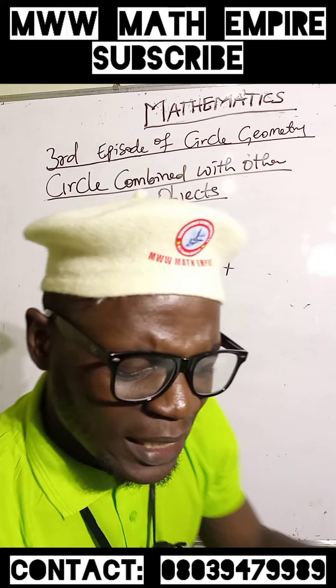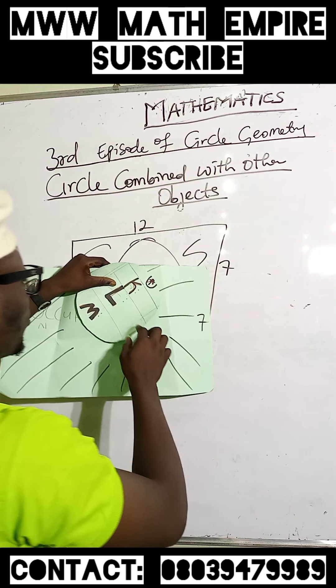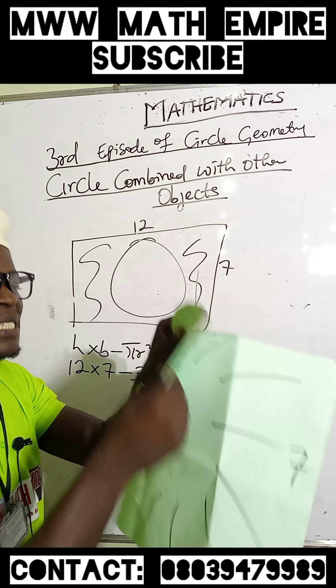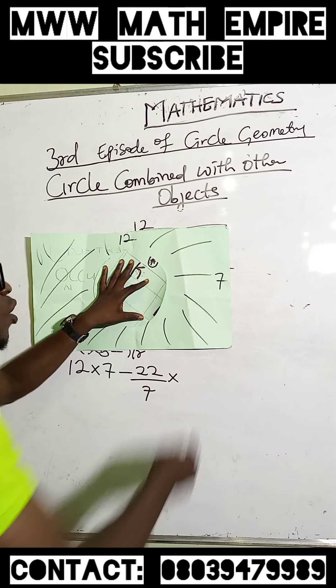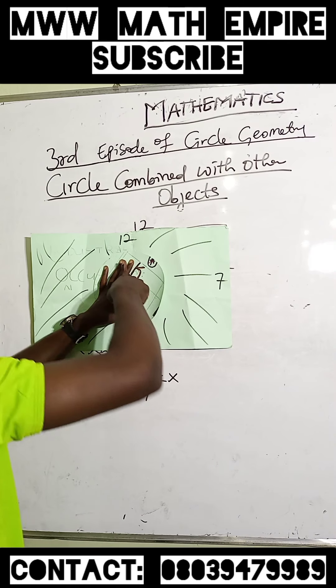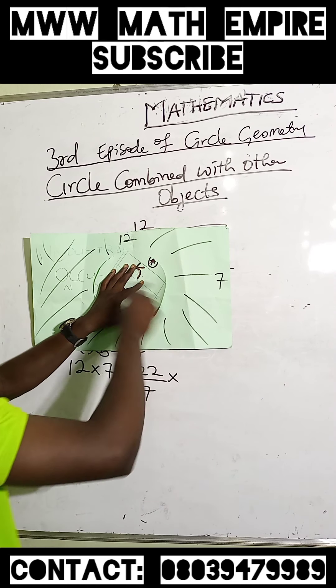But at this point, this is a full circle inside the rectangle. You can see the space. So the length of this cannot be the radius. Rather, it will be the diameter.